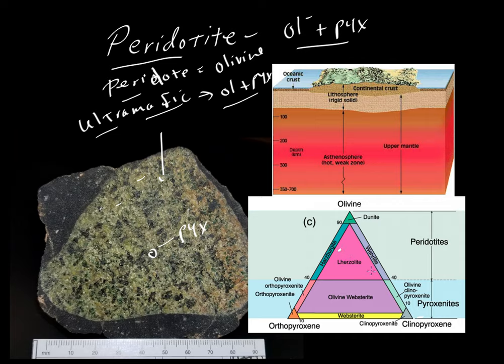this ultramafic xenolith that we're showing, would probably plot in the Lursalite field. It would have well more than 40% olivine. So this would be 100% olivine here, zero down here. This line represents the 40% mark that separates peridotite from pyroxenite. This guy probably has closer to 50% or 60% olivine.